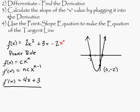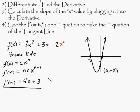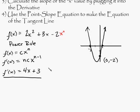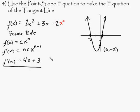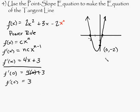So now what we want to do is step number 3, which is calculate the slope of the x value by plugging it into the derivative. So in this case, 0 is the x value that we're evaluating here. So if we plug in a 0 into f prime of x, you get f prime of 0 is equal to 4 times 0 plus 3. So our f prime of 0 is equal to 3. So that makes the slope equal to 3.